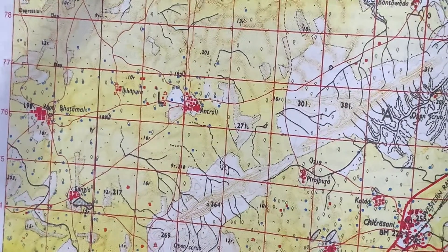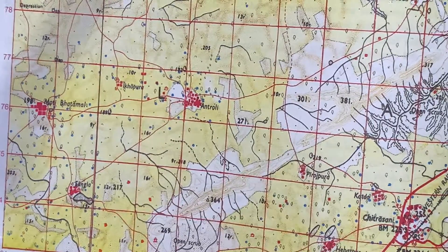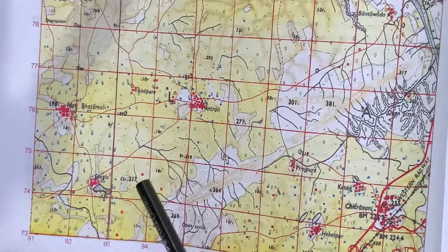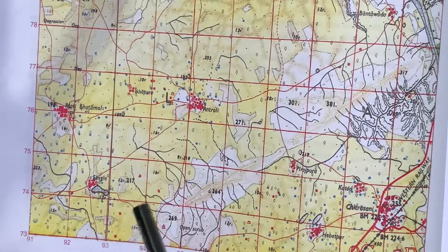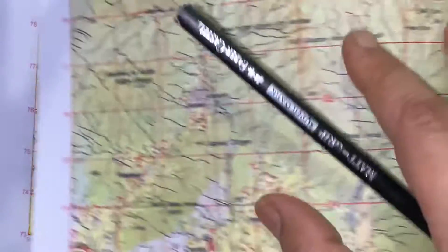Second, you can see in here only, there are grids. Different, different grids where you can find only one hut or two huts are there. This is the example of scattered or dispersed settlement.